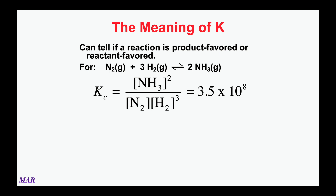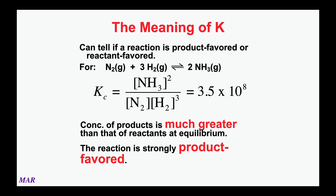Here's an example. That reaction we looked at earlier - nitrogen and three hydrogen gases making two ammonias - the K value, which is a Kc, is 3.5 times 10 to the eighth. That K is much greater than one, so this is a product-favored equilibrium. Once equilibrium is established, we would expect there to be more ammonia than nitrogen and hydrogen. More ammonia, less N₂ and H₂.